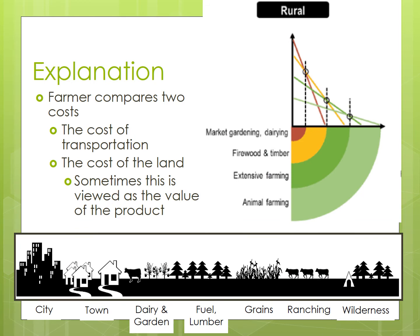So how did Von Thunen come up with this model, and why does it operate this way? He knew that farmers wanted to maximize their profit, and with only a single market, there must be a reason to explain why farmers would grow a certain crop in a certain position relative to that market. Essentially, this model examines the influence of distance from market and the influence of transportation costs on the type and intensity of agriculture. Von Thunen argued that transportation costs were proportional to the distance from market — with greater distance, transportation costs were higher — and those costs would govern how the land was used.